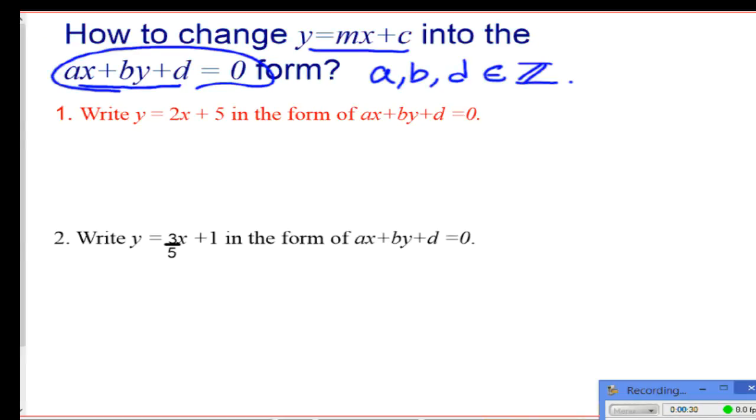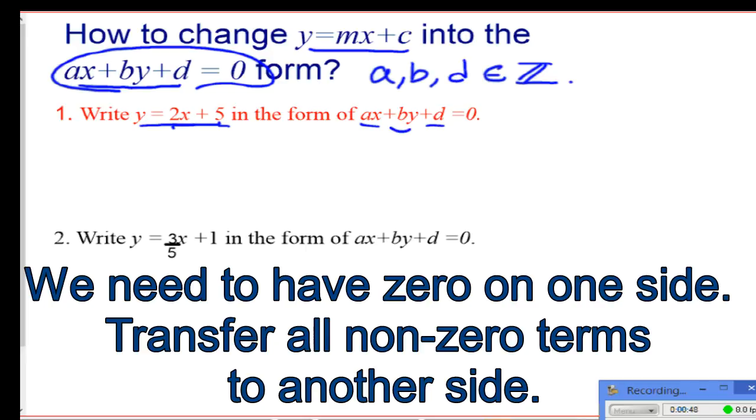First is to change this equation, y = 2x + 5, into the form ax + by + d. Basically, what we need to do is an arrangement. You can see that I already have 2 and x and a 5 here, so that could be my ax and d, so I just need by.